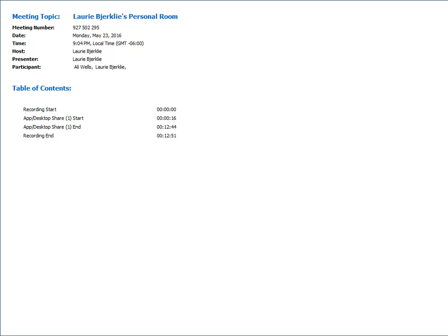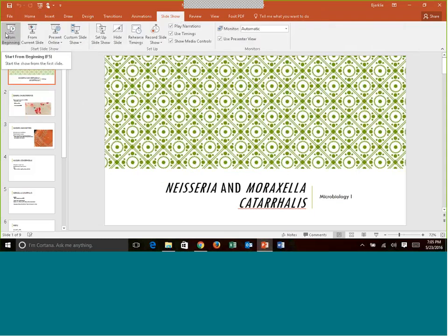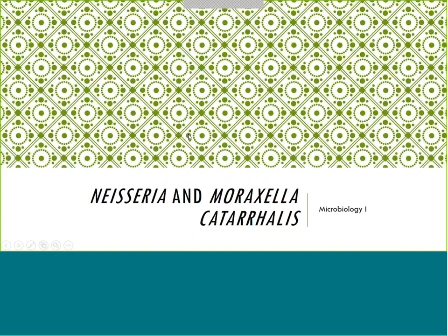Hi everyone, welcome to week eight. This week we are switching gears again and going into another group of bacteria. So this week we are all about gram-negative cocci - completely different switch. We've covered gram-positive cocci, gram-positive rods, and now we're covering gram-negative cocci, specifically Neisseria and Moraxella catarrhalis. These are very fastidious organisms, meaning they are very picky. They are not going to grow on blood agar - chocolate agar is going to be the key to growing these organisms.